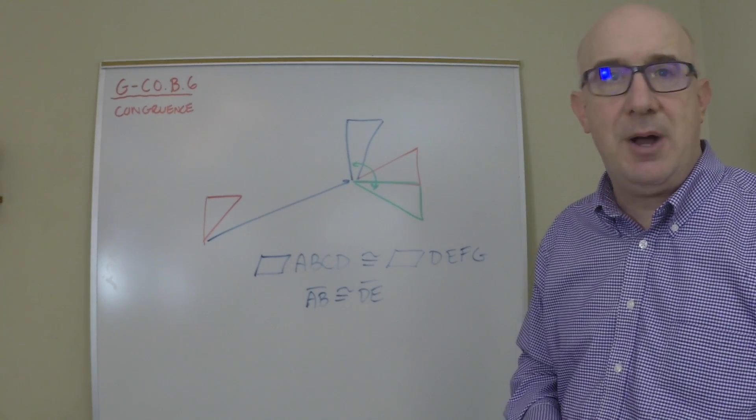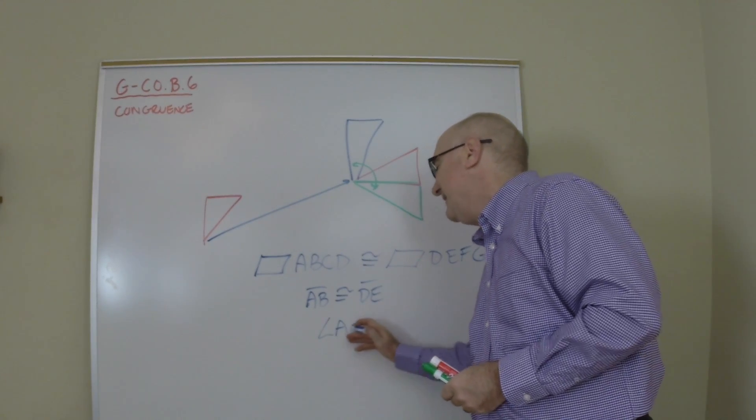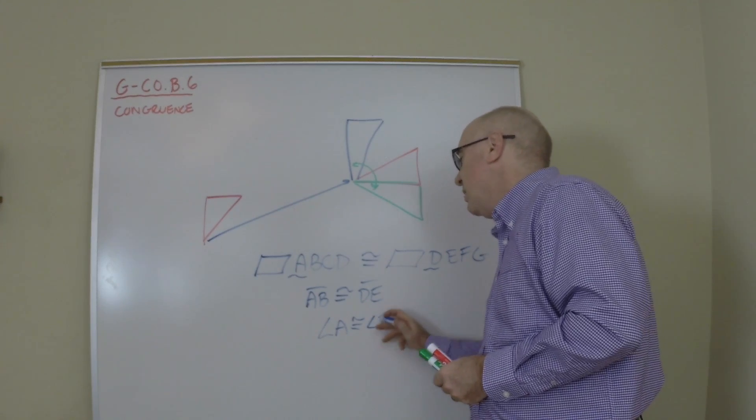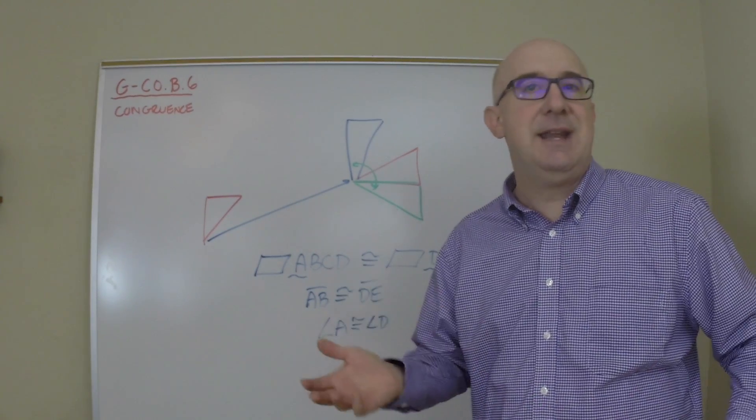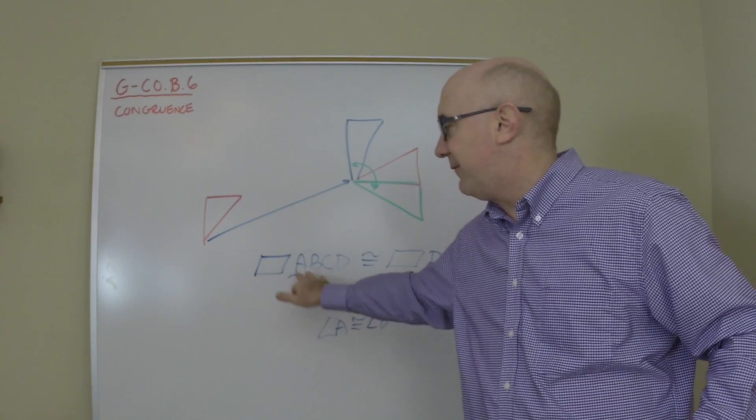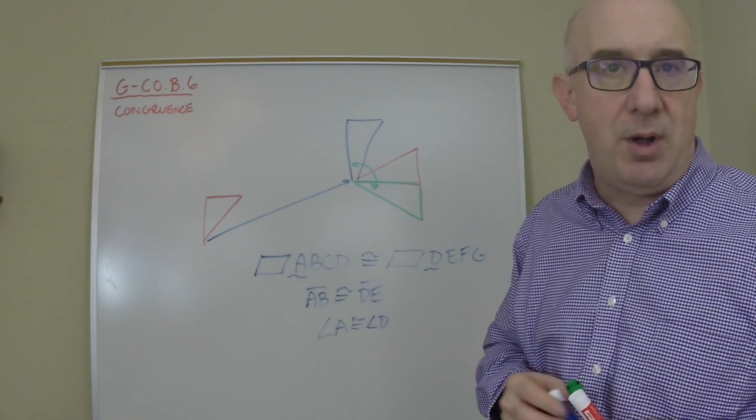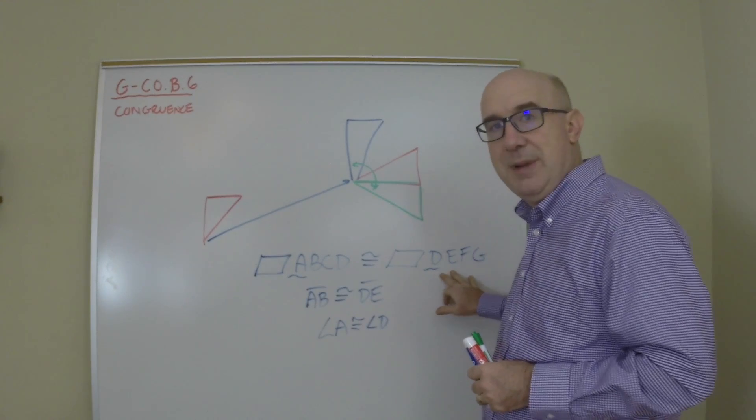It's also true about the angle relationships. Angle A would have to be exactly the same as angle D. So the way you write a congruent statement isn't just any naming that you want. You name the first shape, and then you name the second one in the corresponding manner. So that when you read this, you're being told about this.